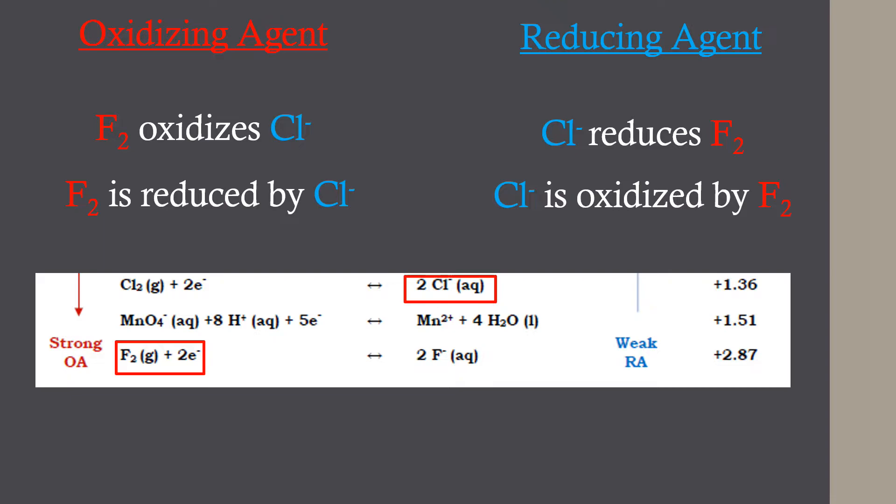An example here shows fluorine as the oxidizing agent and chloride as the reducing agent. Both can create reactions with each other. They are shown here in this snapshot from the table.